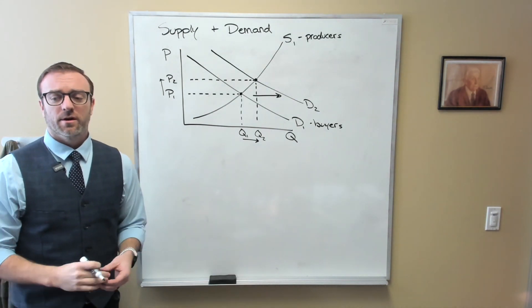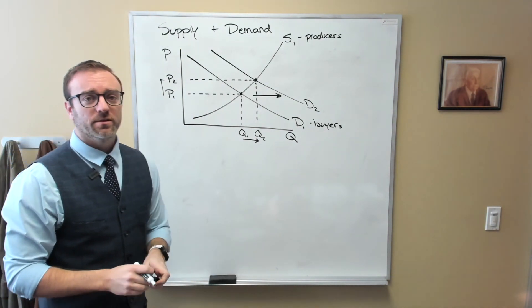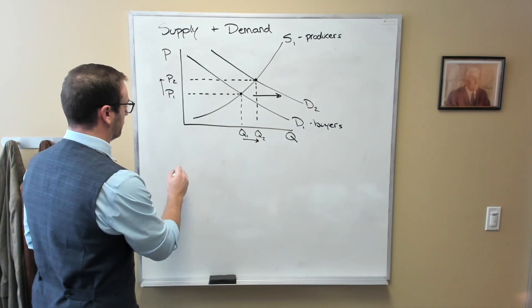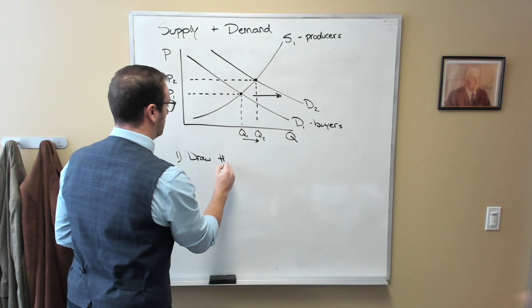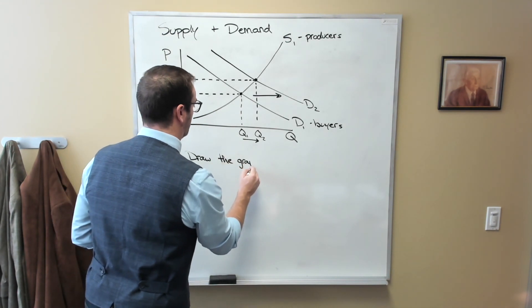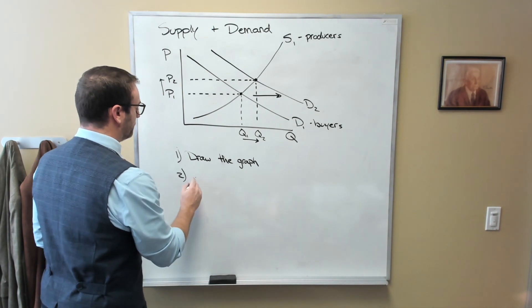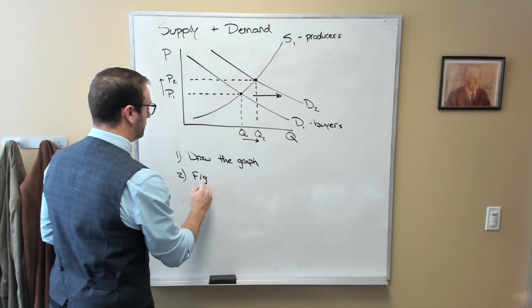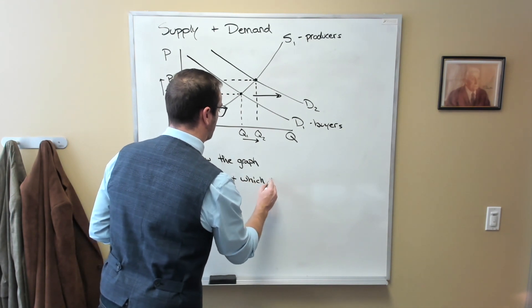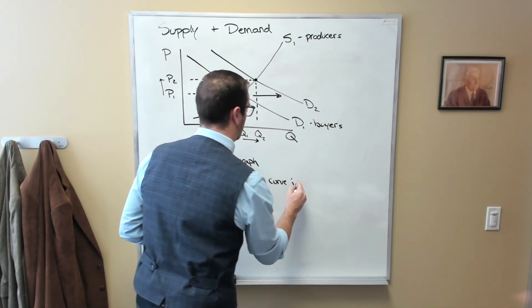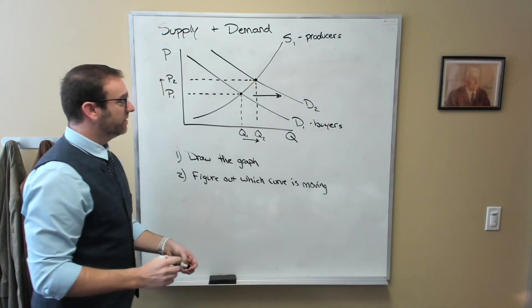So what I want to do is give you my four-step plan for understanding any single shift in any curve whatsoever. Step one is always going to be to draw the graph. Step two is always going to be to figure out which curve is moving. In this case, it will be either the demand curve or the supply curve.